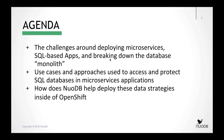We have a lot in store, so we'll share a bit about what areas we'd like to cover today. First, we're going to cover some of the challenges around deploying microservices, specifically with SQL-based applications, and breaking down what we're going to call the database monolith. Then we'll go into best practice use cases and approaches for how you can better access and protect SQL databases in a microservices deployment architecture. Finally, we'll cover more about NuoDB and how it can specifically help you deploy these data strategies inside of OpenShift.